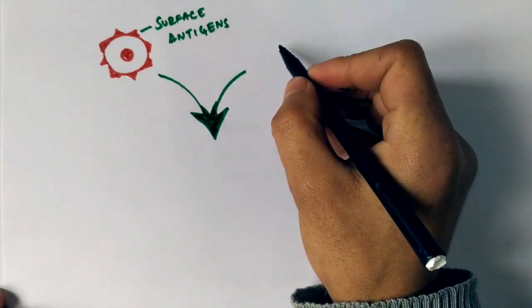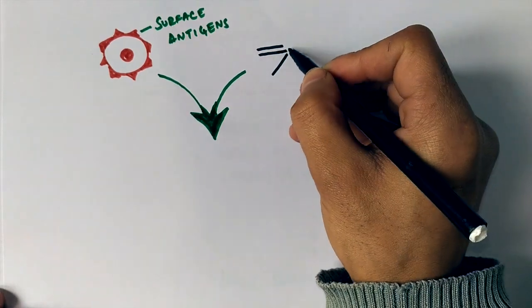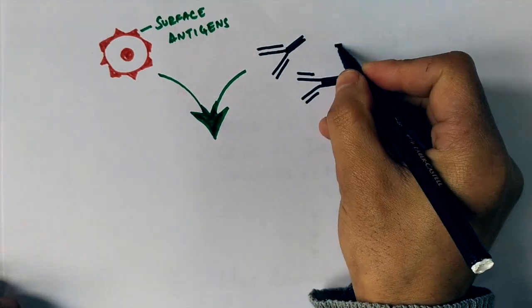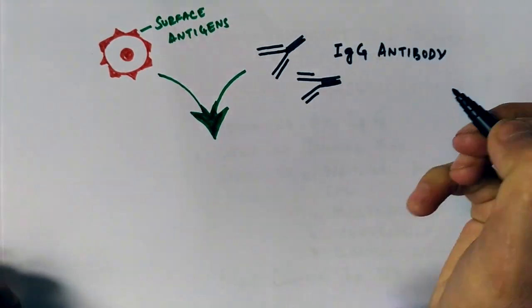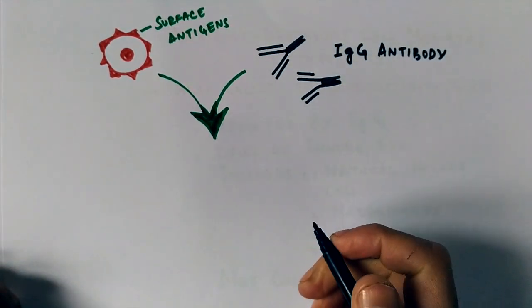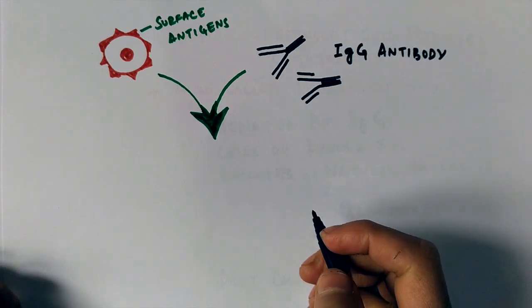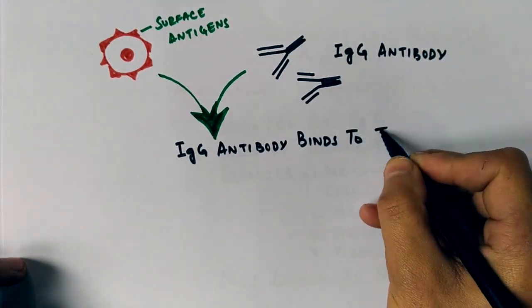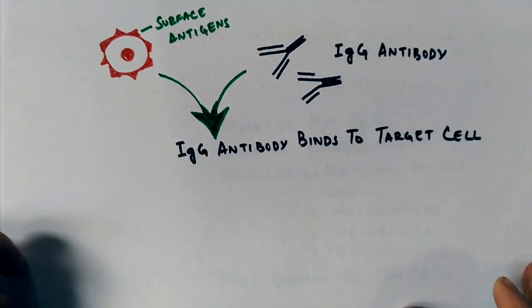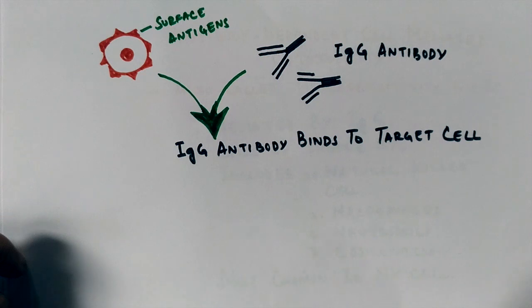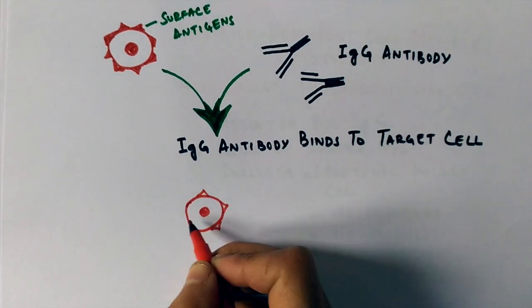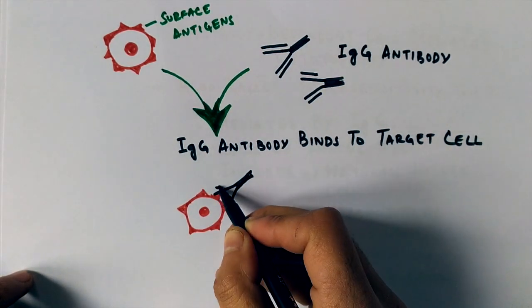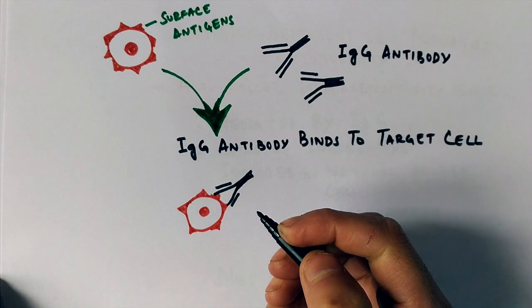Then from the other side we have IgG antibodies. The black side is the Fc region and the front side is the Fab region. IgG antibodies bind to the target cell through surface antigens as shown in the figure. The Fab region part of the antibody binds towards the surface antigen, and the Fc region of antibody is left outwards.